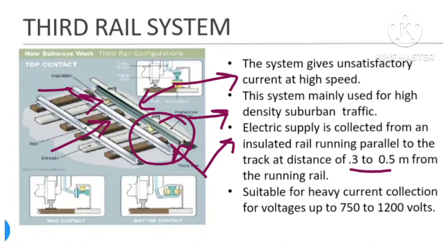The fourth point is that it is suitable for heavy current collection for voltages up to 750 to 1200 volts. These are the four points to remember in the third rail system.